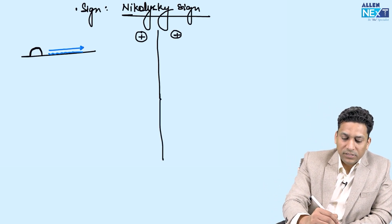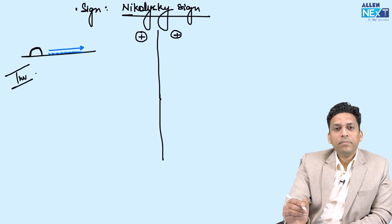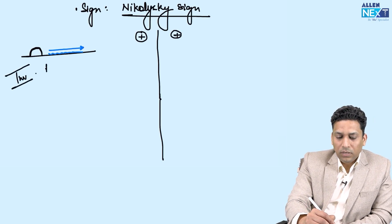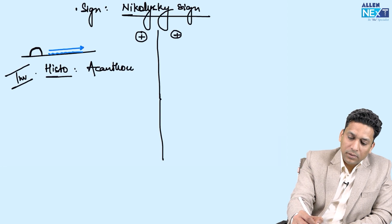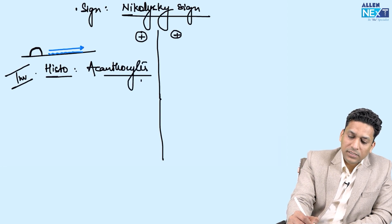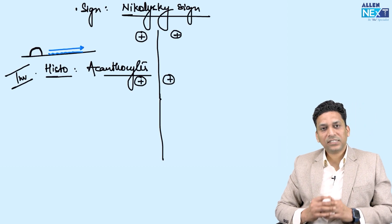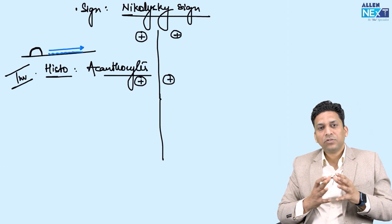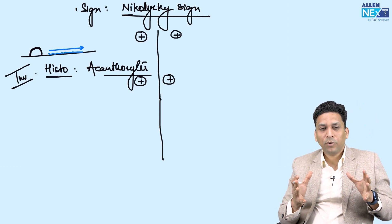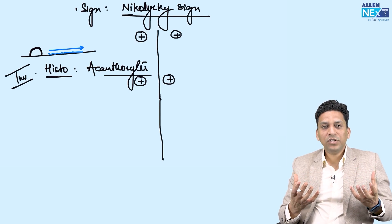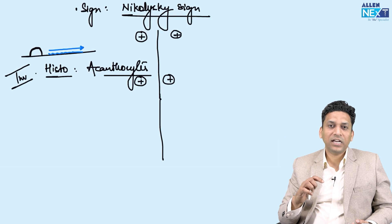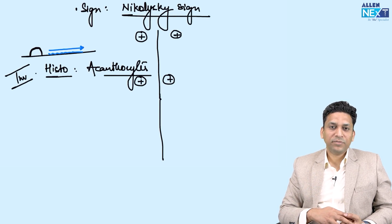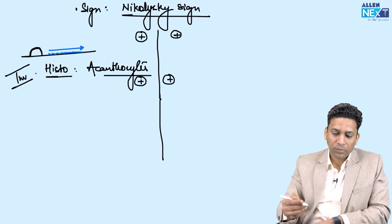The next difference is investigations. Two important investigations can be done. First is histology, on which you will find acanthocytes. These are formed due to acantholysis — separation of keratinocytes — and when the keratinocytes start separating from all sides, they acquire an oval shape with a large nucleus and perinuclear condensed cytoplasm giving a halo around them. Such cells are known as acanthocytes and can be seen positive in both.